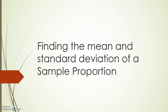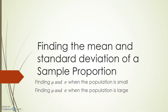We're going to be looking at two main things. First of all, how do we find the mean or mu and the standard deviation or sigma when the population in a question is small? And secondly, how do we find mu and sigma when the population is large?